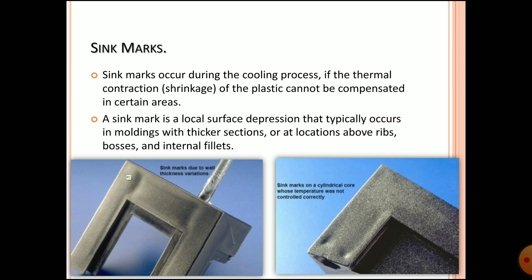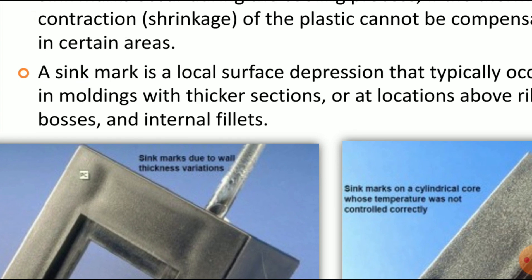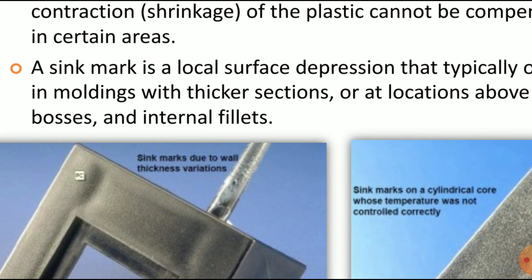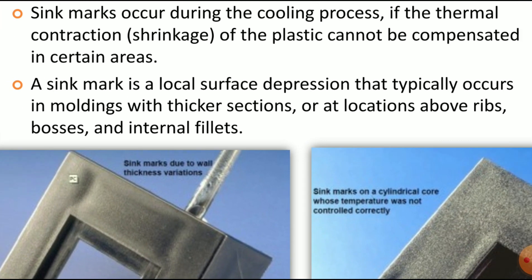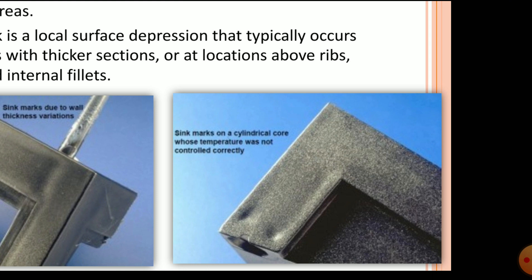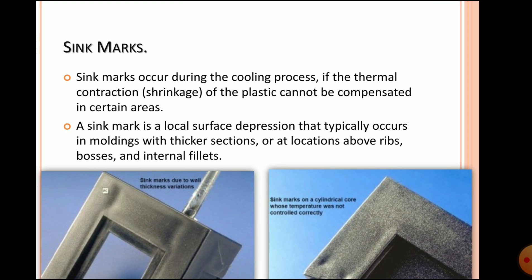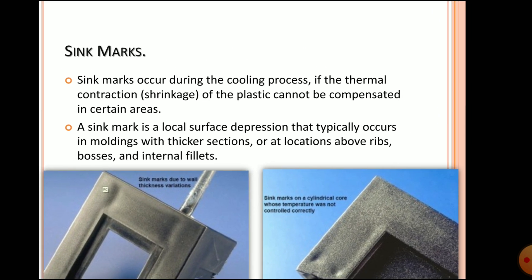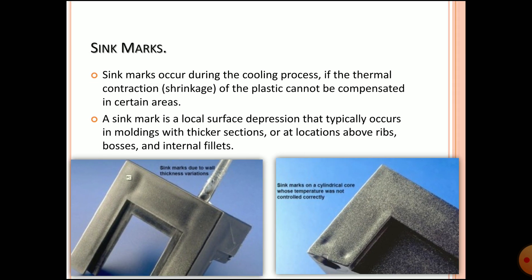A sink mark is a local surface depression that typically occurs in moldings with thicker sections or at locations above ribs, bosses, and internal fillets, as you can see in the image. Due to solidification at the bigger area, contraction happens and you find a depression on your component surface — mainly at sections such as ribs, bosses, and internal fillets.